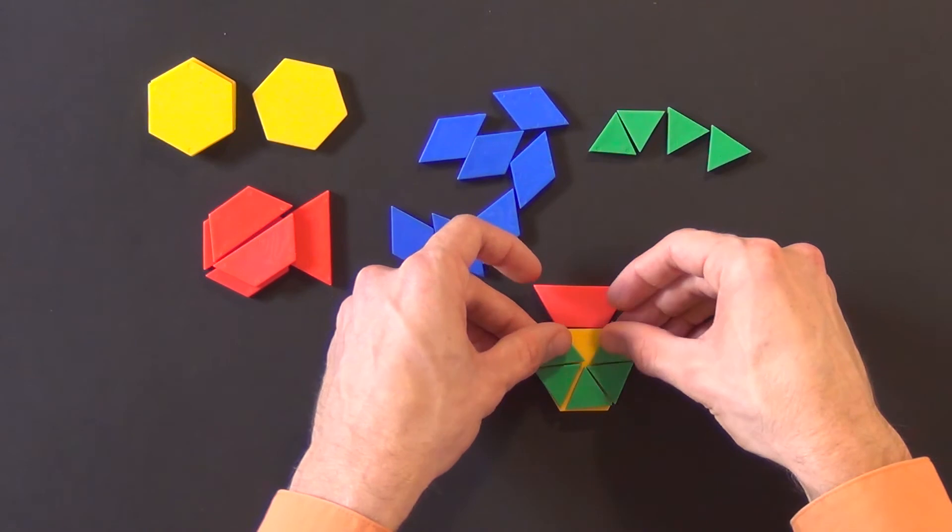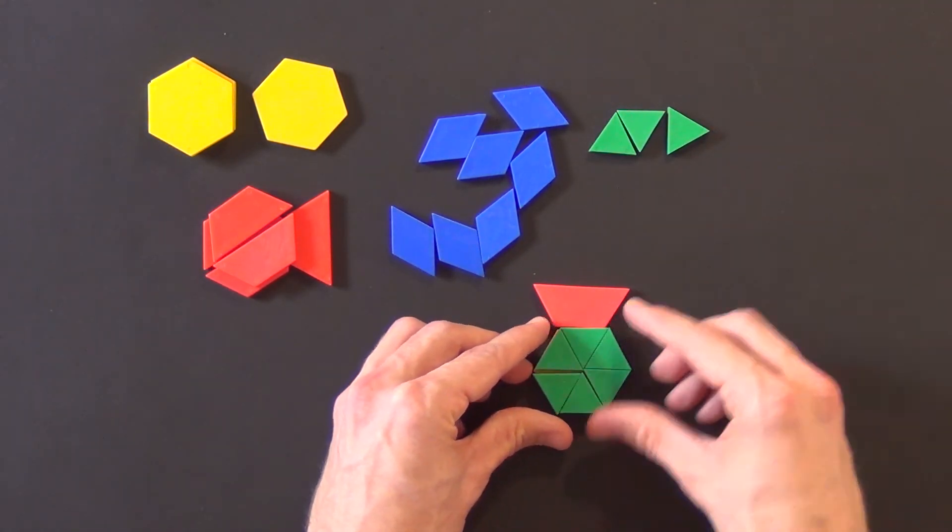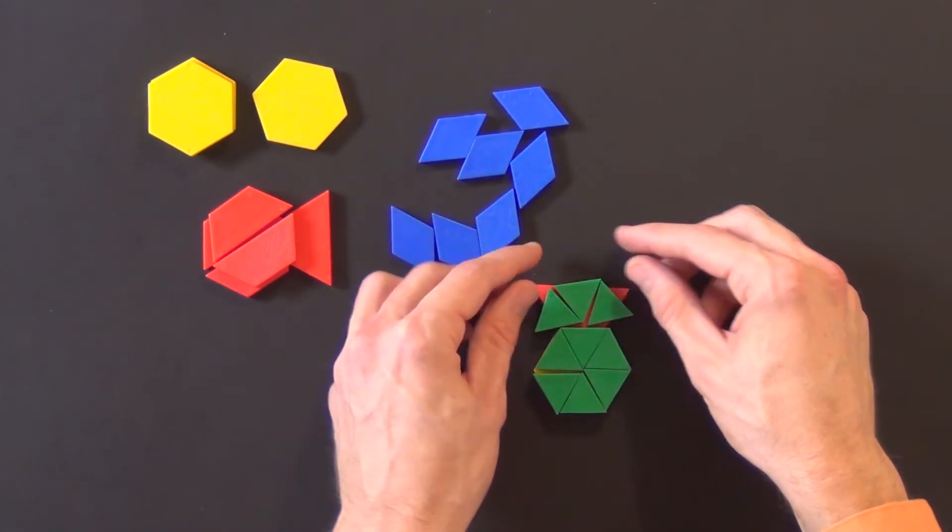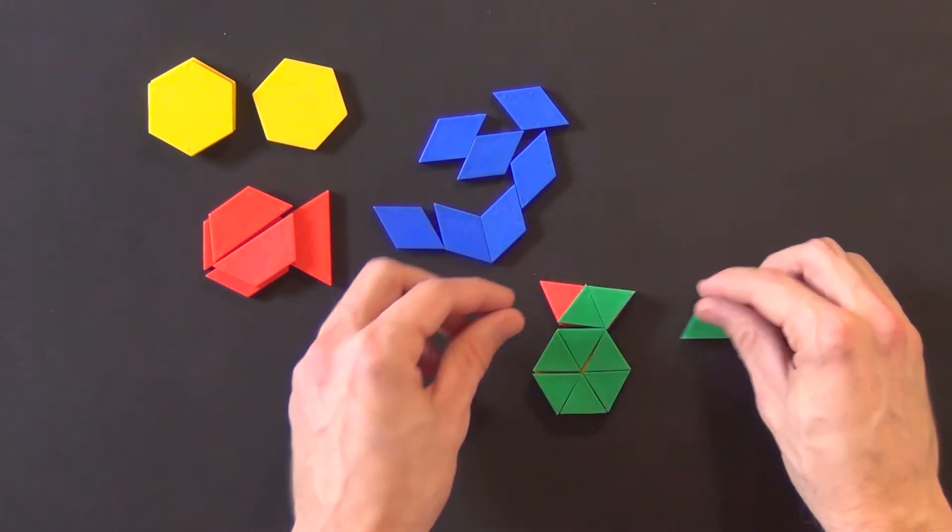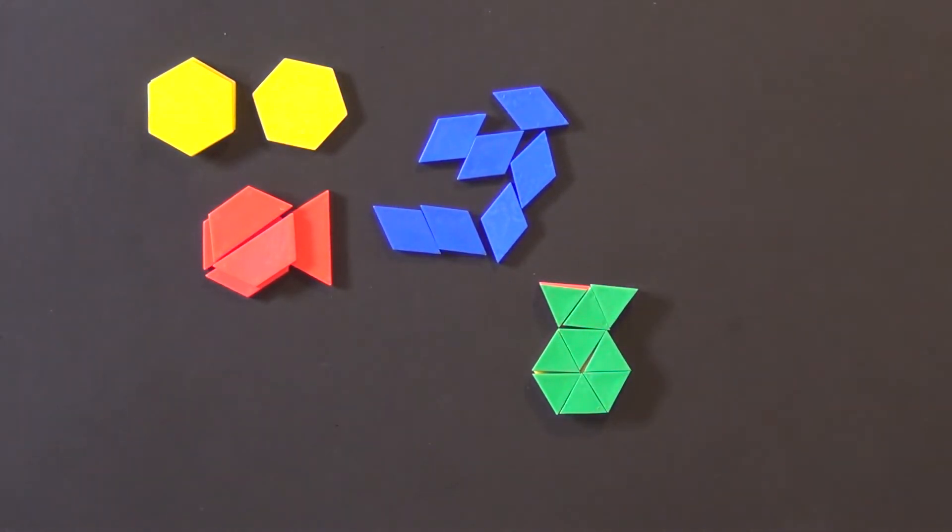But they're going to run into a problem if they chose the red trapezoid to represent. That's six pieces, seven, eight, nine. So this actually represents not eighths, but ninths. So the red trapezoid cannot be combined with the yellow hexagon to represent our whole.